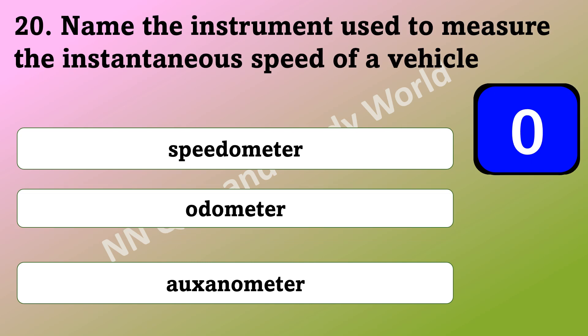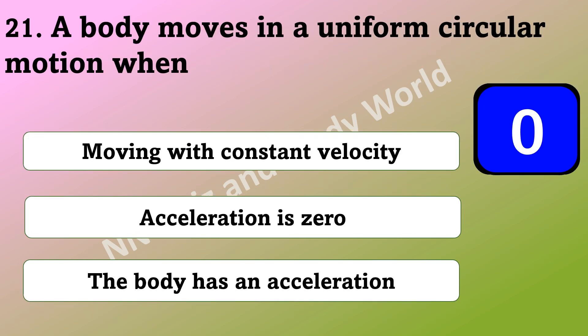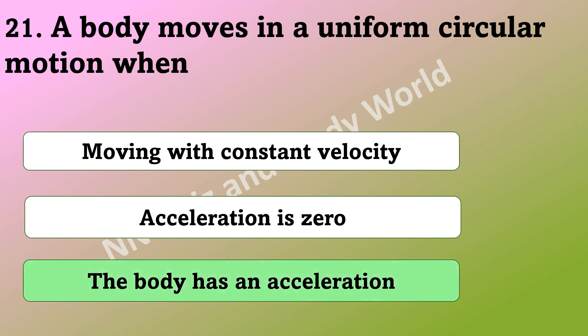What is the name of the instrument used to measure the instantaneous speed of a vehicle? Is it speedometer, odometer, or oxanometer? The answer is speedometer. A body moves in uniform circular motion when it is moving with constant velocity, its acceleration is zero, or the body has an acceleration? The answer is when the body has an acceleration.